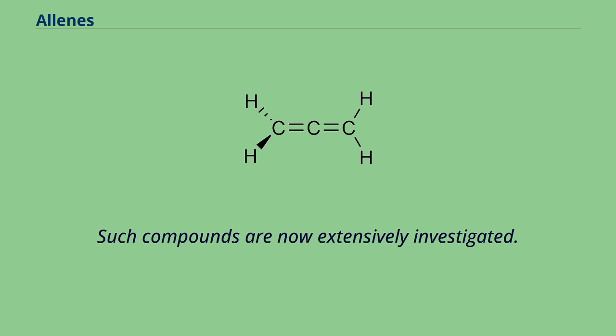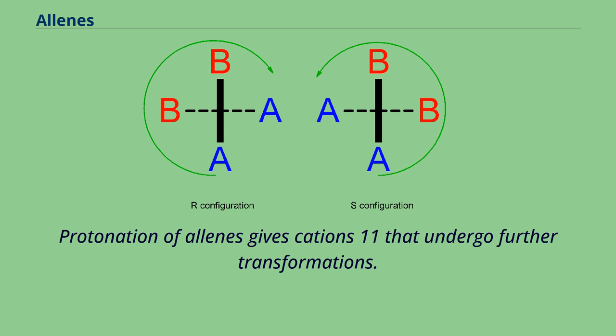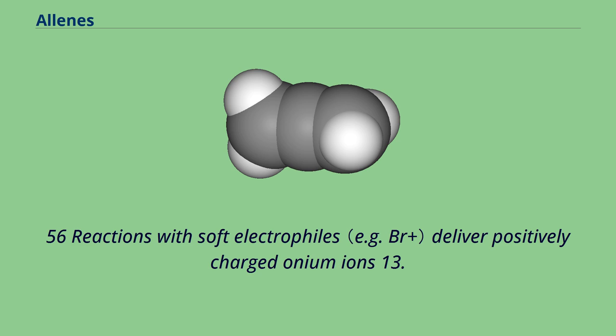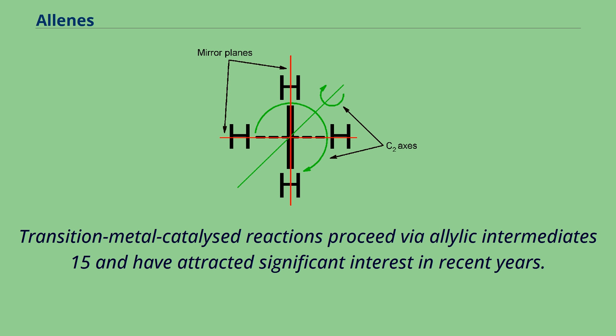Protonation of allenes gives cations that undergo further transformations. Reactions with soft electrophiles deliver positively charged onium ions. Transition metal-catalyzed reactions proceed via allylic intermediates and have attracted significant interest in recent years.